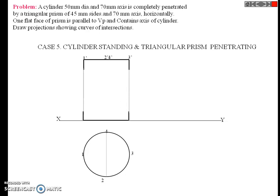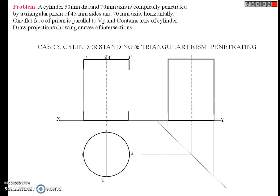Label the front view projections as 1 dash, 2 dash, 4 dash, 3 dash. Draw a 45-degree line and project onto it. Then draw the side view. This completes the first step.